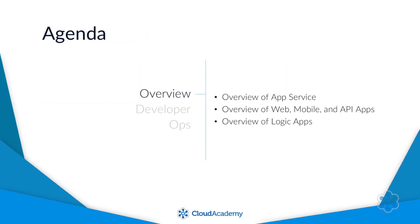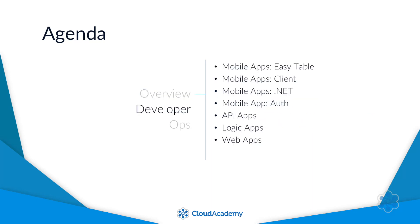What are we going to cover? I've broken this course into three sections. The first is a high-level overview of App Service — that'll include what App Service is, an overview of web, mobile, and API apps, as well as an overview of logic apps, which are really cool. After that, the next section covers how to get started developing apps on App Service — that includes mobile development, specifically the mobile backend, using code-free backends and the .NET options, as well as mobile authentication. We'll then move on to API apps, logic apps, and then web apps.